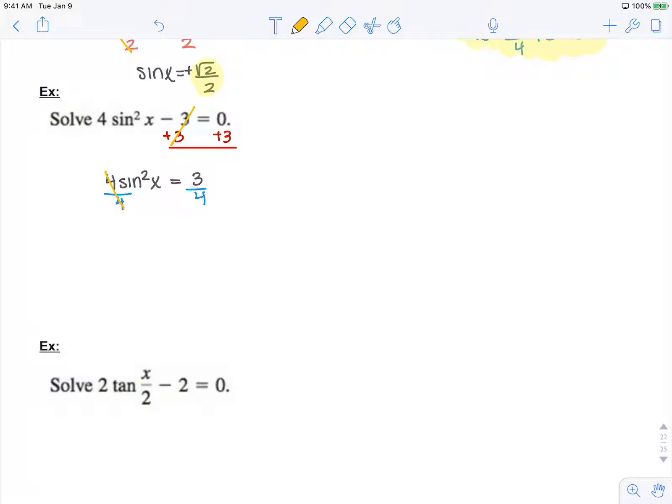And I have 4 sine squared x equals 3. My next step is to divide both sides by 4. That cancels here, and I'm left with sine squared x equals 3 fourths.